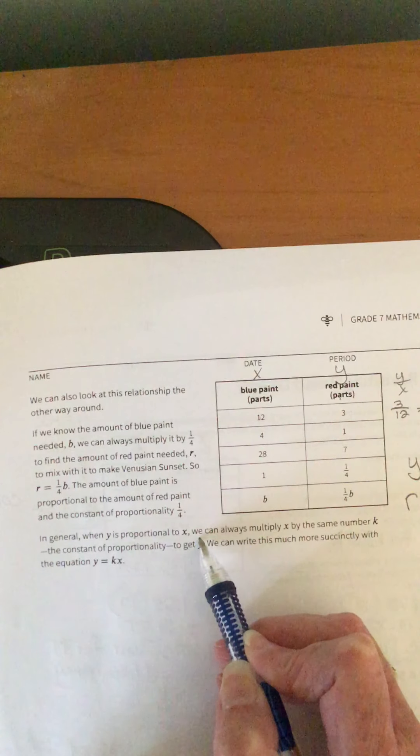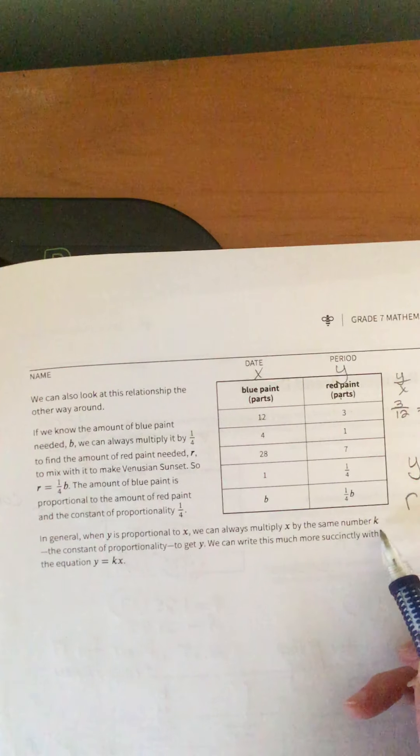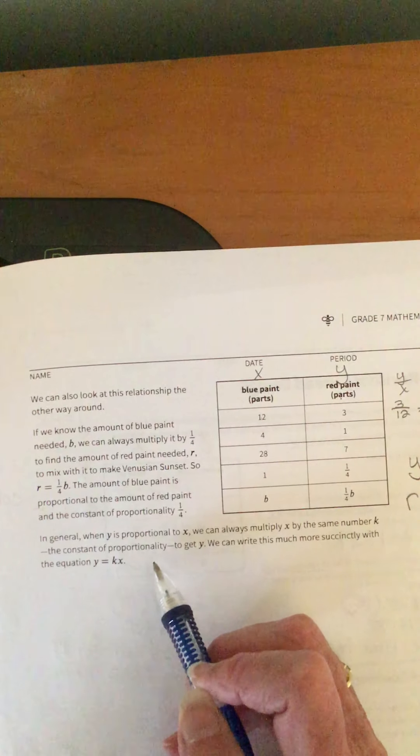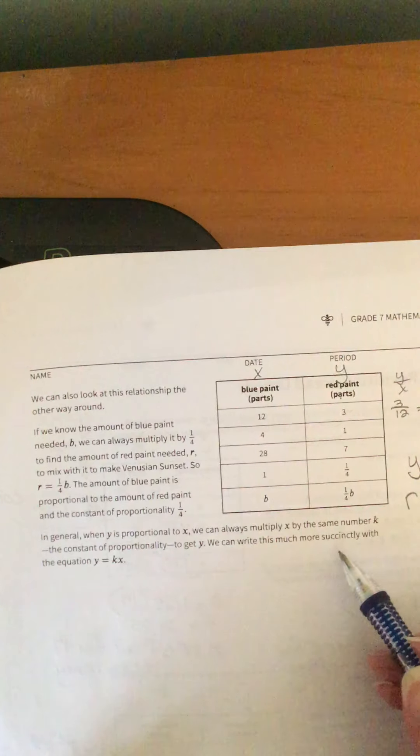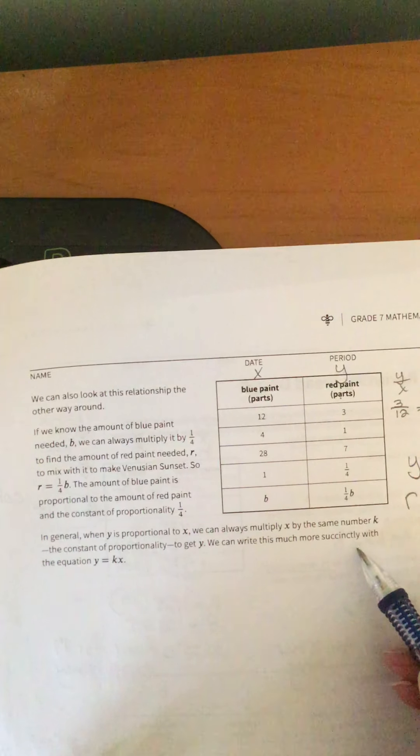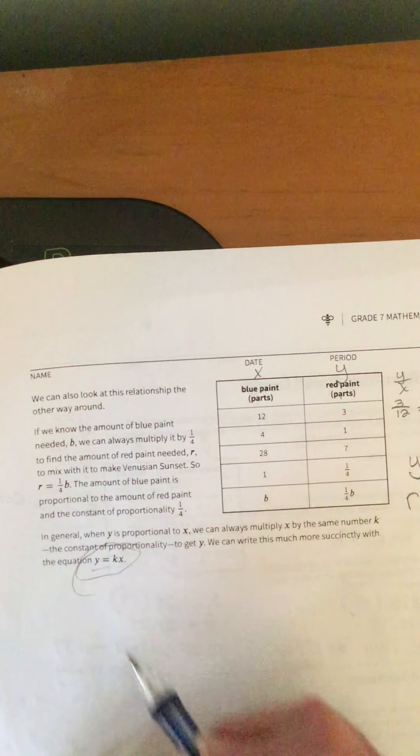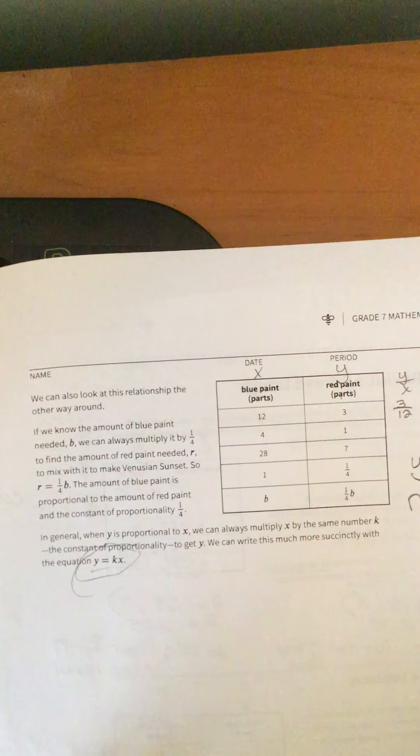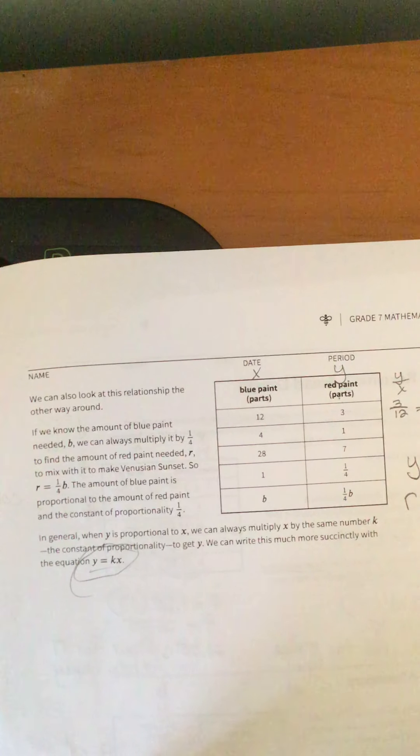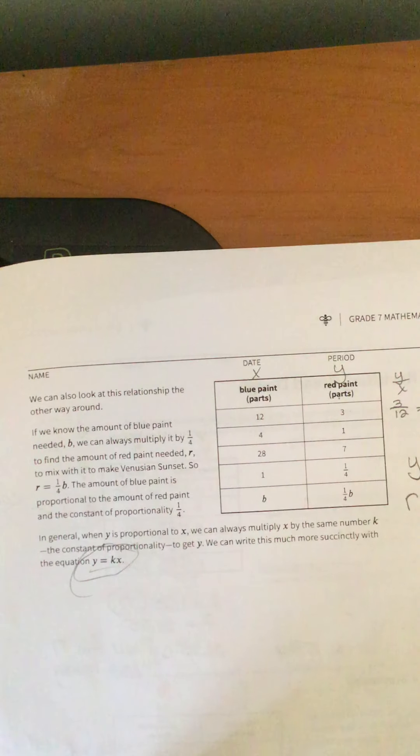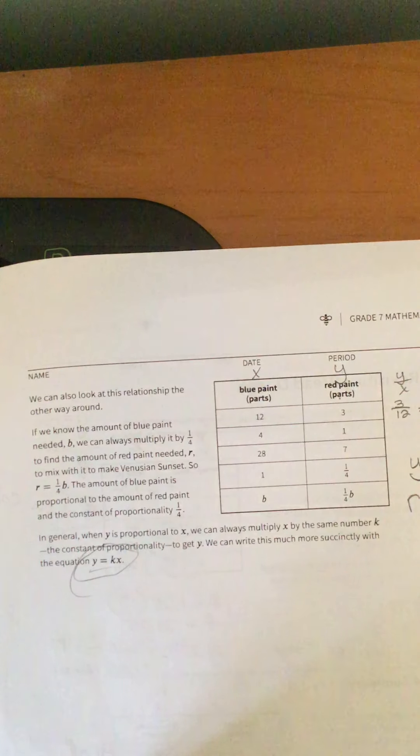So in general, when Y is proportional to X, we can always multiply X by the same number K, the constant of proportionality, to get Y. We can write this much more succinctly, and that means simply, with the equation Y equals KX. Okay. So I hope you enjoyed today's lesson, and I will see you on Zoom. If you have any questions, please have them ready, and we will do the practice problems together.